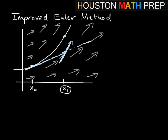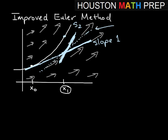We extend both lines: one line running through the right-hand point with slope 1 from the initial tangent, and another line through the right-hand point with slope 2 from the derivative at that point. To make the approximation more accurate, we take the average of these two slopes — slope 1 plus slope 2 divided by 2 — giving us an average slope line through the right-hand point.